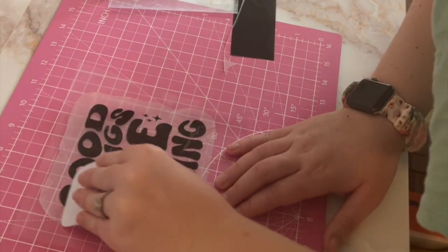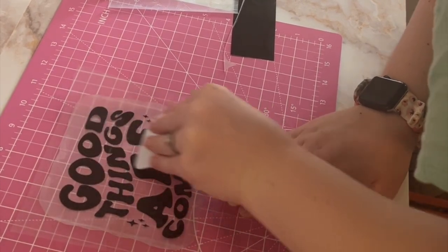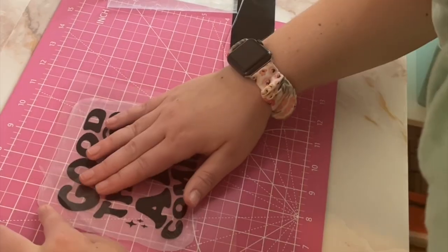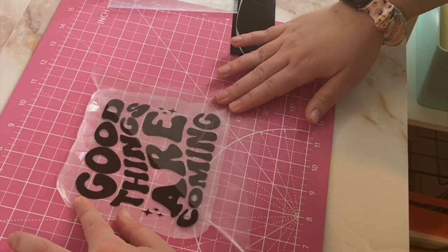And then you're just going to use the scraper tool again to adhere the vinyl onto the cling and then slowly remove the transfer tape off of the vinyl and the cling.